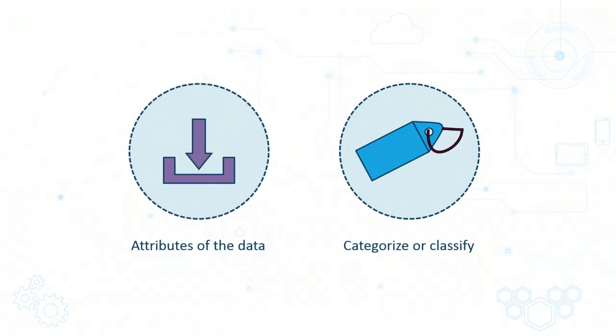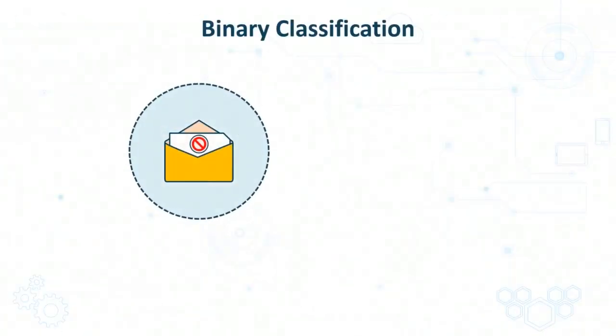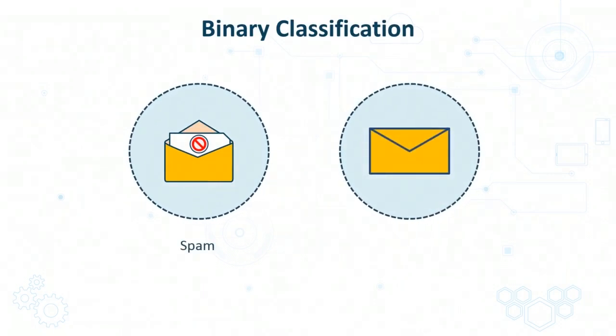Depending on the type of problem being solved, the input data can be categorized into multiple classes. If there are just two options to choose from, for example, spam and ham, then the problem being solved is one of binary classification, since the output will take a binary form.